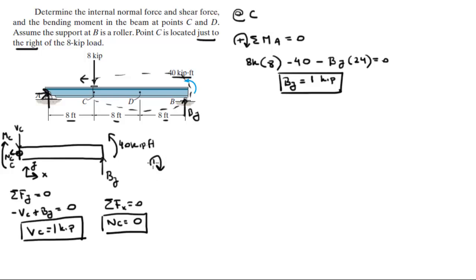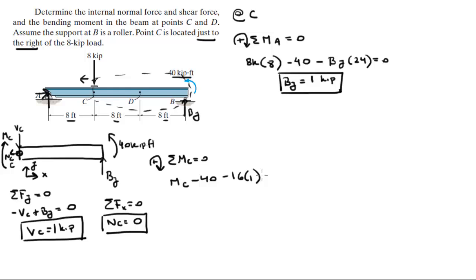Assuming clockwise is positive, the sum of the moments at C equals 0. That means the moment at C minus the 40 kip-foot moment at the far right, minus the moment created by BY — which is 1 kip times a distance of 8 plus 8 equals 16 feet — all equals 0. Solving, the moment at C equals 56 kip-feet, positive, so it's going clockwise.